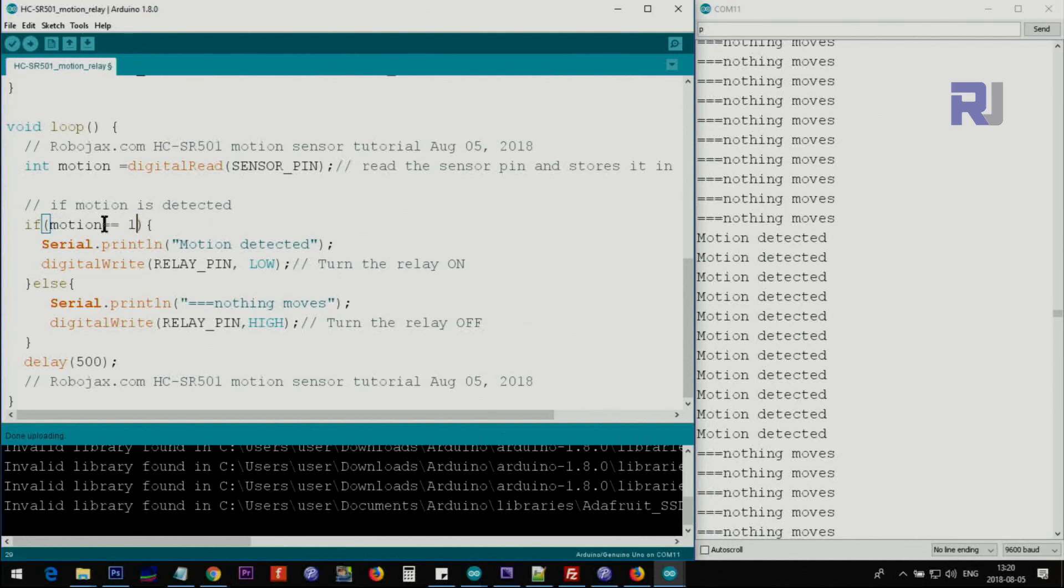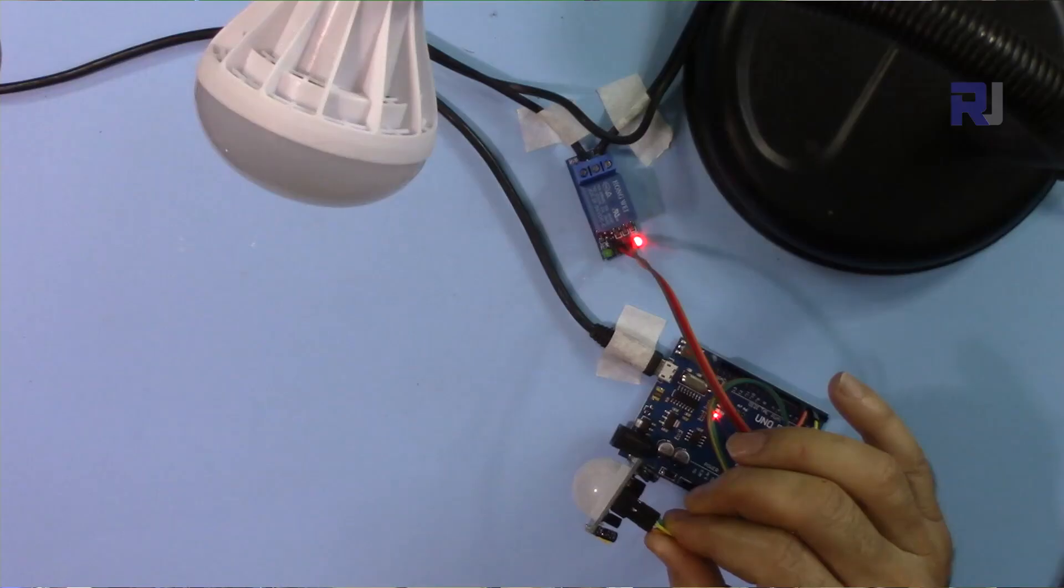And here we check if motion. I did not put here equal equal 1 because 1 means true, and you can simply just say if motion, that means if motion is true or equal 1. Then we use this one, motion detected printed, and also we set the relay pin as low. The reason for using low is that the module that I use will be turned on when it's low. Otherwise, if the motion is not there, we set this, nothing moves, this text here, and we set the relay as high. If your relay behaves the opposite way, change this to high and change this to low. Then we wait here for 500 milliseconds and the loop continues like that.